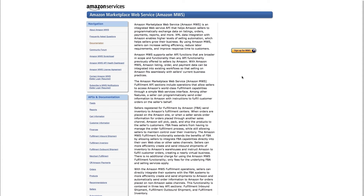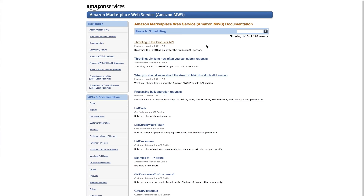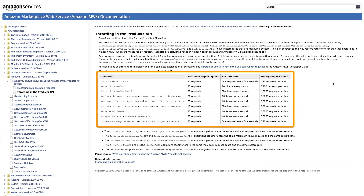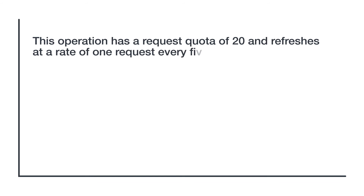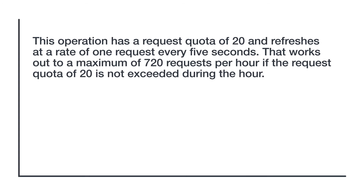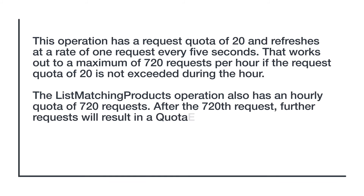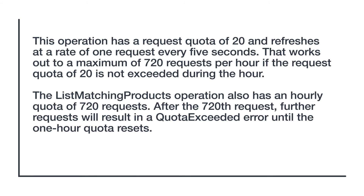Specific throttling rules are found by navigating to developer.amazonservices.com, clicking Documentation, and searching for throttling. Different requests and feed submissions have their own throttling rules. For example, the list-matching products operation has a request quota of 20 and refreshes at a rate of one request every five seconds. That works out to a maximum of 720 requests per hour if the request quota of 20 is not exceeded during the hour. The list-matching products operation also has an hourly quota of 720 requests.